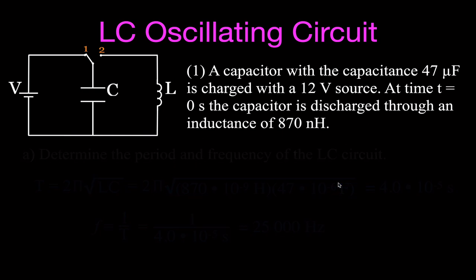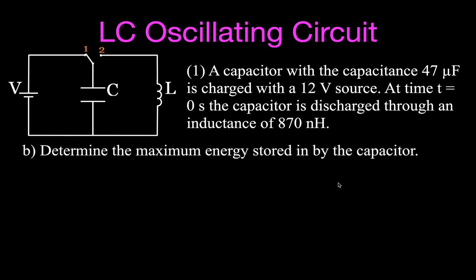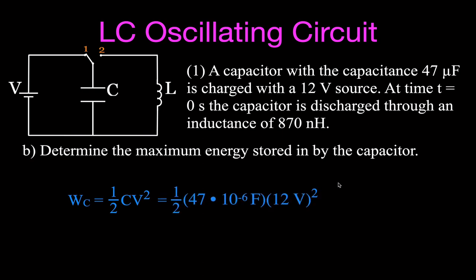That's letter A. For letter B, we determine the maximum energy stored in the capacitor. The equation is W_C = ½CV², where we must not forget to square the voltage. The capacitance is 47×10⁻⁶ F and the voltage is 12 volts, so W_C = ½ × (47×10⁻⁶) × (12²) = 3.4×10⁻³ joules, or 3.4 millijoules.